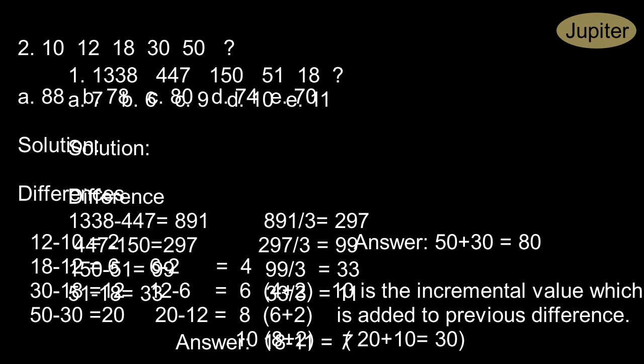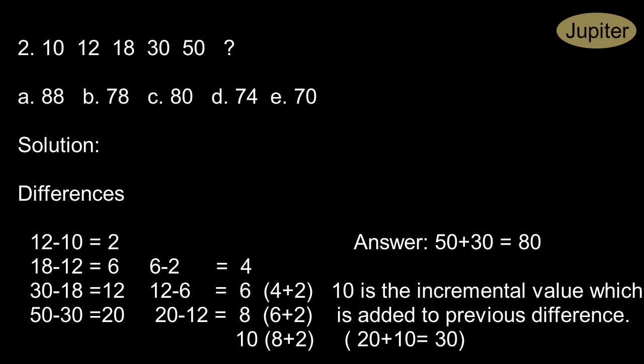Let us find out the difference between these numbers. 12 minus 10 is 2. 18 minus 12 is 6. 30 minus 18 is 12. 50 minus 30 is 20.